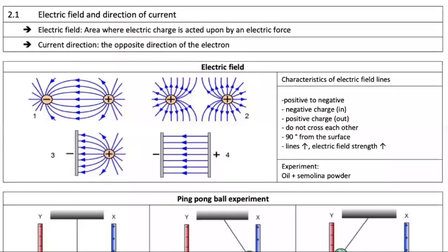Topic 2.1 is about electric field and direction of current — it's a two-in-one subtopic. First, you need to know what is the meaning of electric field. Electric field is where the electric charge is acted upon by an electric force, meaning there is an electrical force pushing the electric charge to move.